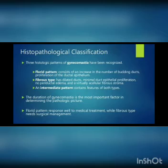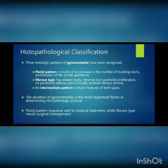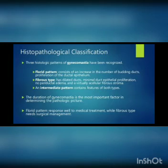There are three patterns of histopathological classification of gynecomastia: the florid pattern, the fibrous type, and the intermediate pattern. The florid pattern consists of an increase in the number of budding ducts and proliferation of ductal epithelium. The fibrous type has dilated ducts, minimal ductal epithelial proliferation, no periductal edema, and virtually acellular fibrous stroma. The intermediate pattern contains features of both types.